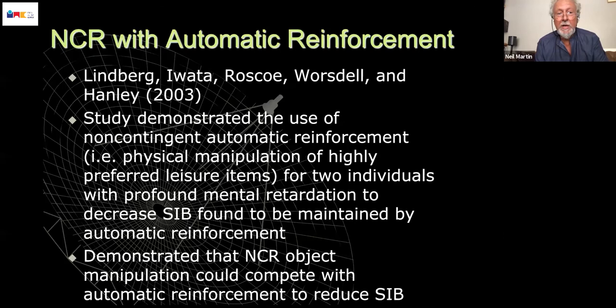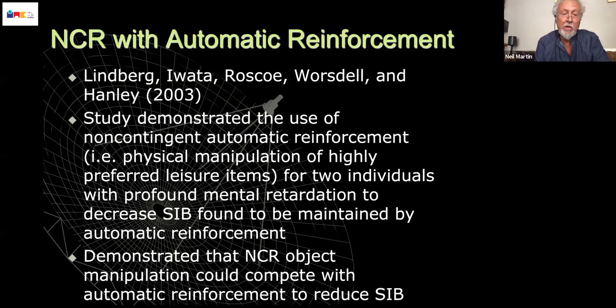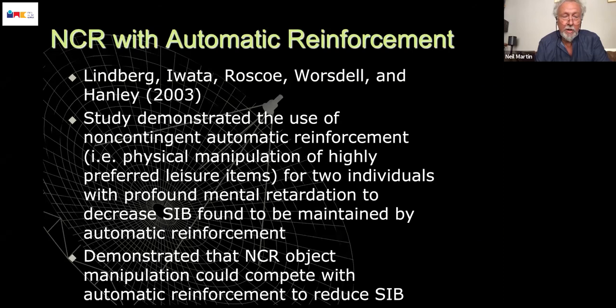In terms of automatic reinforcement, here's a paper published in 2003. They demonstrated that providing access to non-contingent stimuli with known automatic reinforcement properties decreased self-injurious behaviour (SIB). The stimulus they used was simply giving access to highly preferred leisure items that individuals could manipulate physically — tactile stimuli — and it was sufficient to lead to reductions in problem behaviour. This is just providing someone with an object they can manipulate.